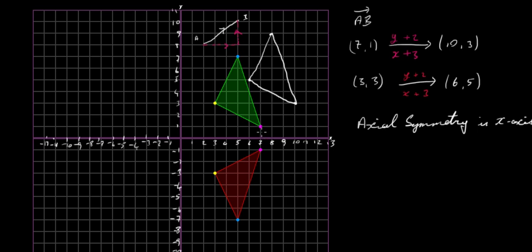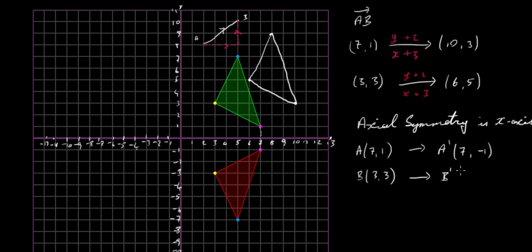For axial symmetry in the x-axis, you drop a perpendicular line down to the x-axis — it's one unit down — then continue another one unit on the other side. So if A is (7, 1), the image A prime is (7, -1): the x stays the same but y becomes minus 1. For point B at (3, 3), you drop perpendicular to the x-axis 3 units down, continue another 3 units on the other side, so B prime is (3, -3).